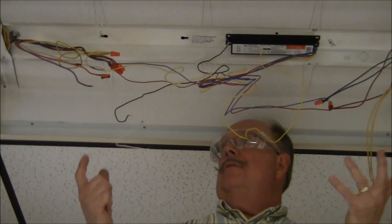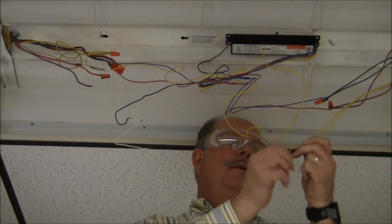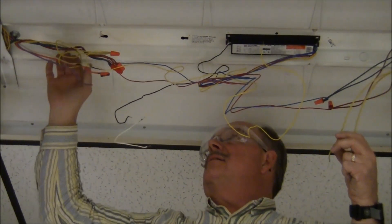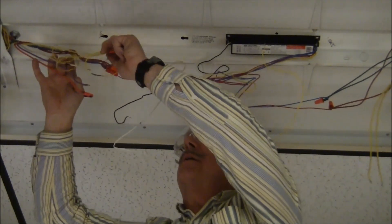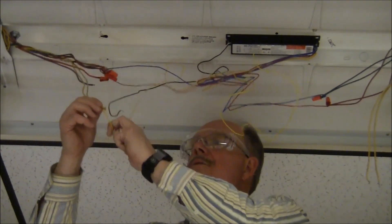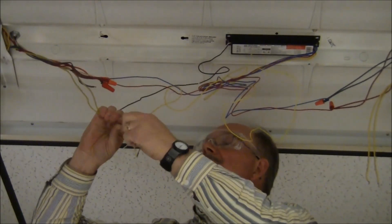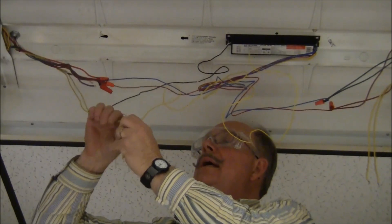This particular fixture is a four-bulb fixture, so if I energize these two yellow wires—one on line and one on neutral—and then take this other yellow set over here and break them apart and put one on line and one on neutral, then I'm done. I can take this ballast out of the fixture, and I've